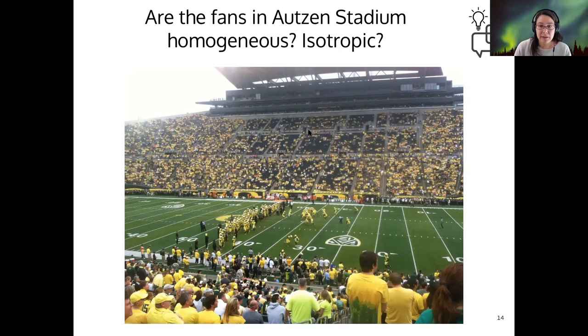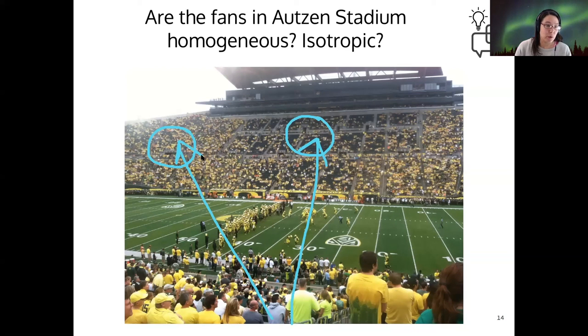It seems like there's not really a homogenous distribution of fans. If I look, for example, at a volume there versus a volume here, then I see different numbers of fans in either of those two areas. So they're not really homogenous. And I guess that means that if I'm standing here taking the picture, then it's not exactly isotropic either. I would see different fans in different directions as well.